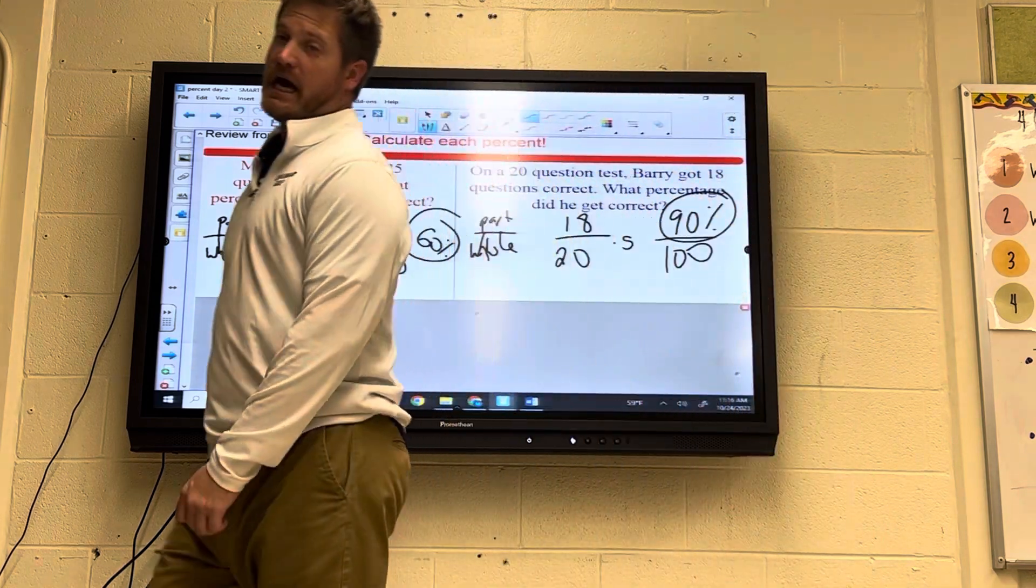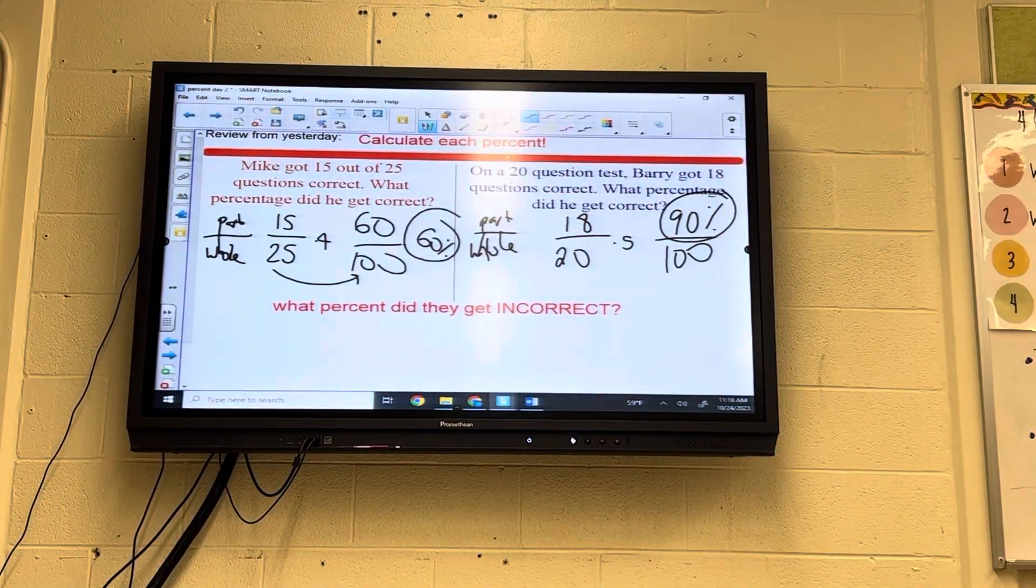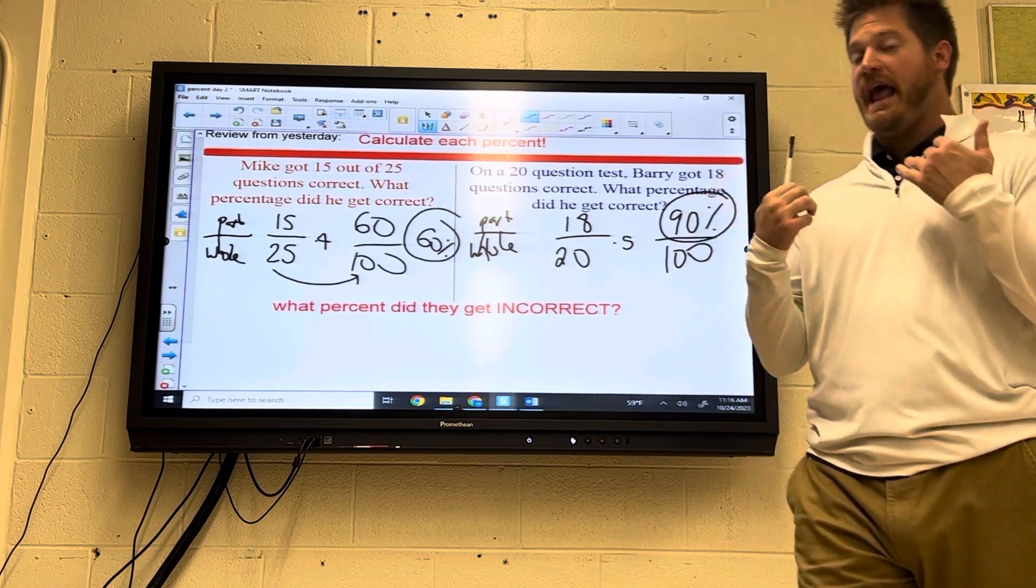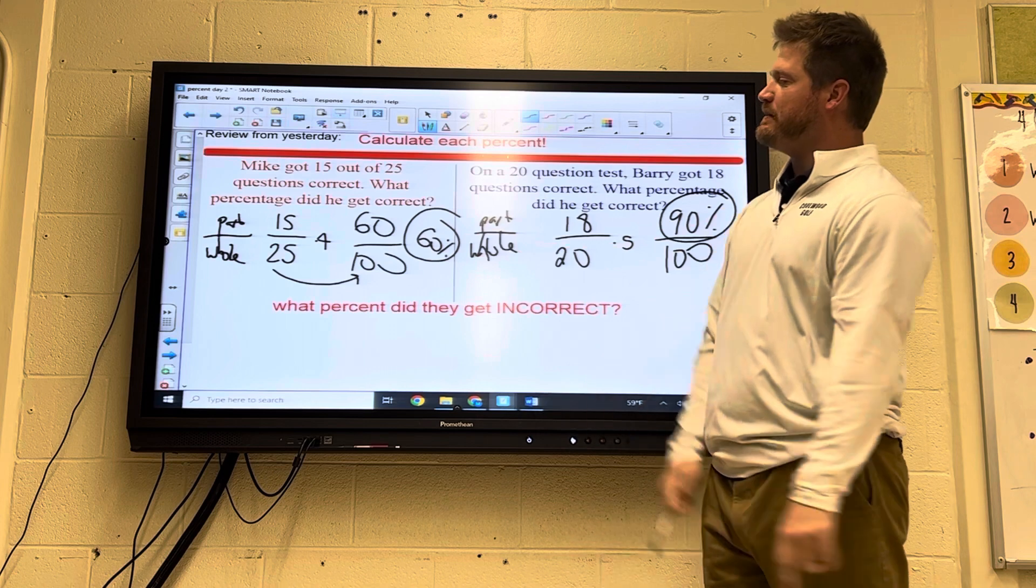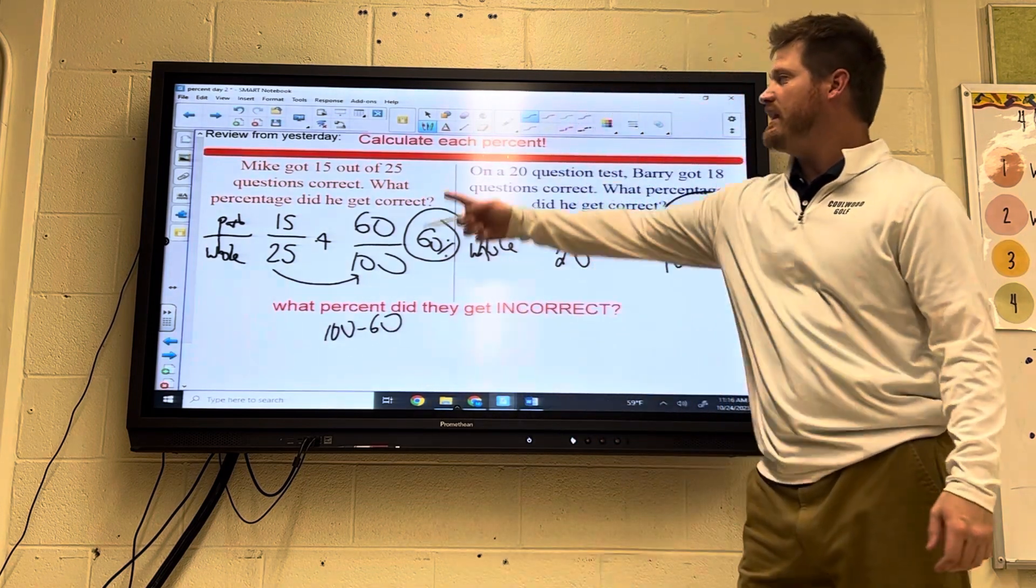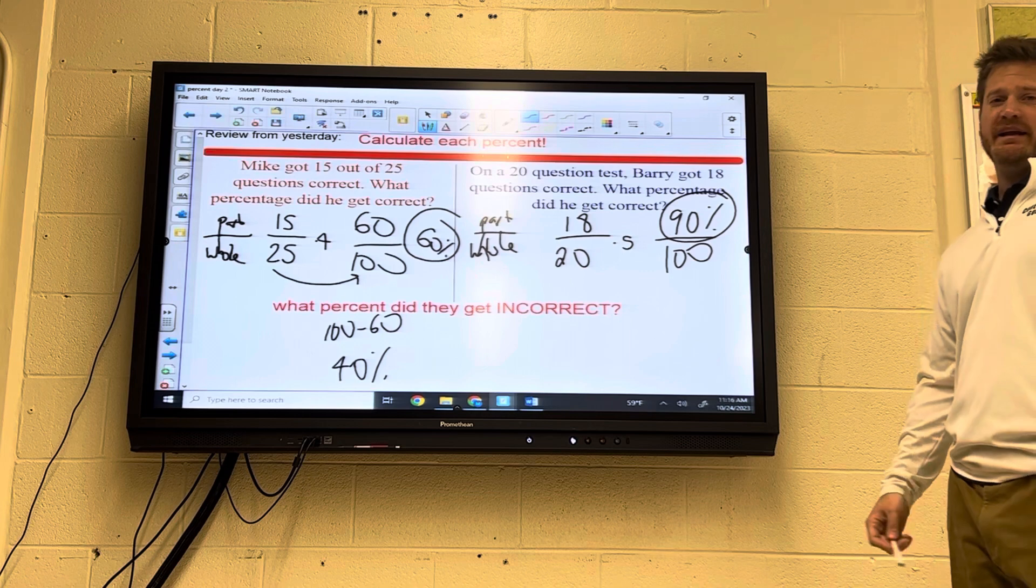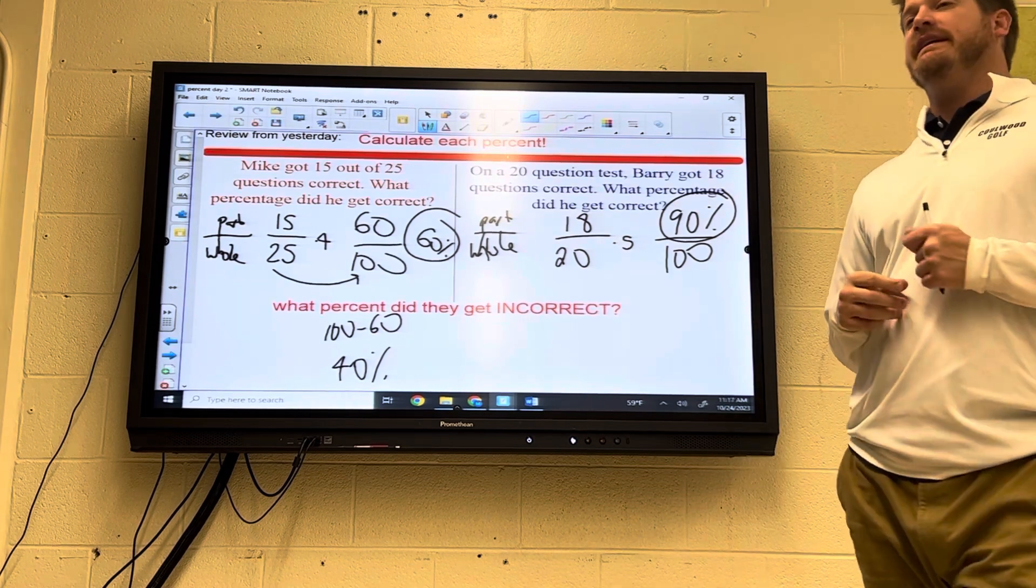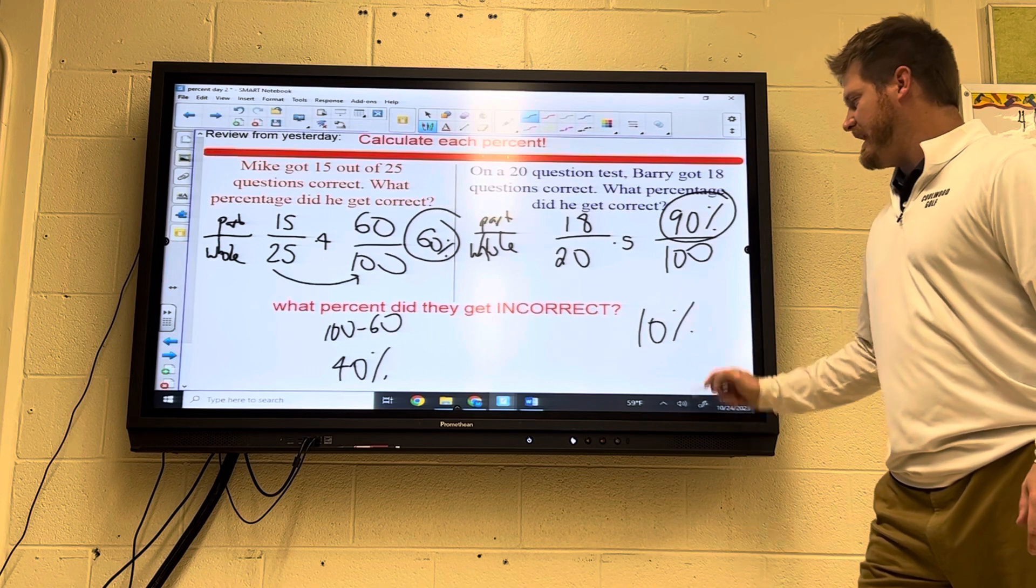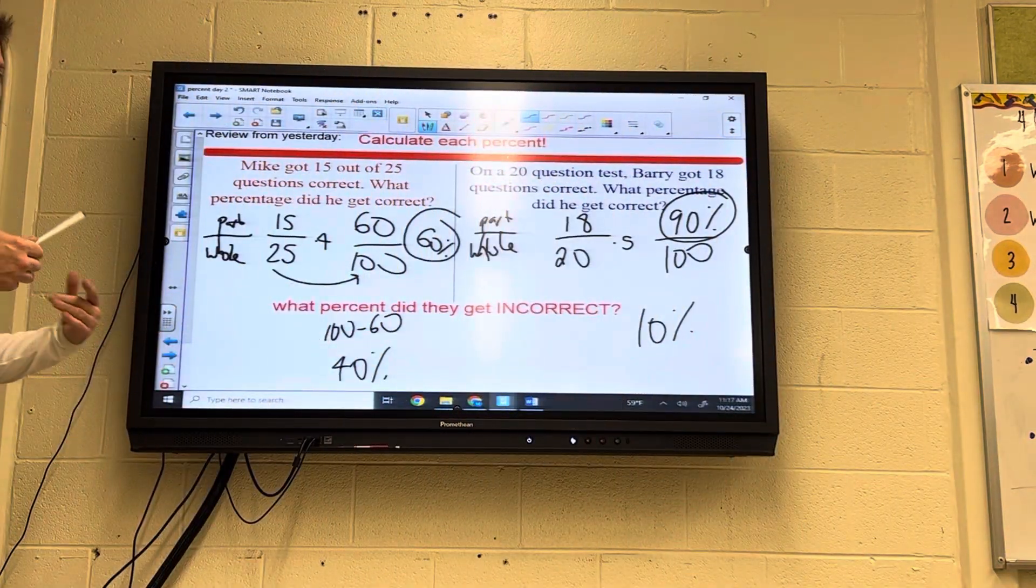That was reviewed from yesterday. Go ahead and copy that down because the most important part today is this section right there. What percent did they not get correct? What did they get incorrect? This is the new thing today. So remember, we already said percent is out of 100, so it's got to add up to 100. So if he got 60% correct, that means the rest, he got incorrect. So we would just do 100 minus 60, and Mike got 40% incorrect. Copying this down. Let's look at Barry. If Barry got 90% correct, he got the majority of it correct. That means he only missed the rest. 100 minus 90 would be 10%. So if it ever gives you one amount and asks for the percent of the other, you have to subtract it. You got to take it away. Out of 100. Part to whole percent, always out of 100.